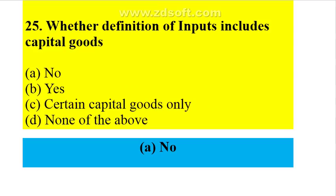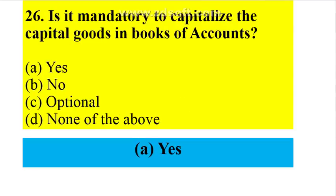Whether the definition of inputs includes capital goods? No — inputs include only raw material; capital goods are not included in inputs. Both definitions are different. It is mandatory to capitalize capital goods in books of account — 100% of capital goods should be capitalized.